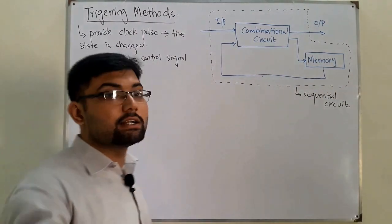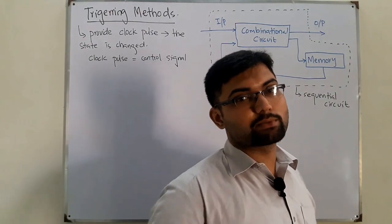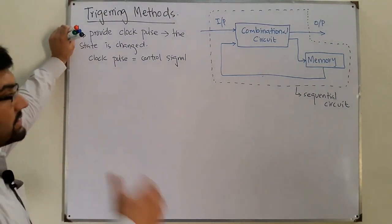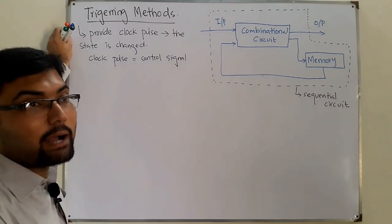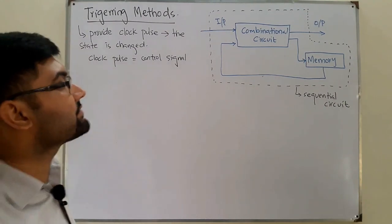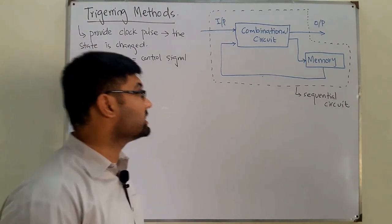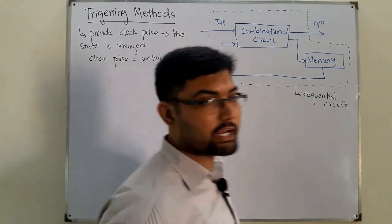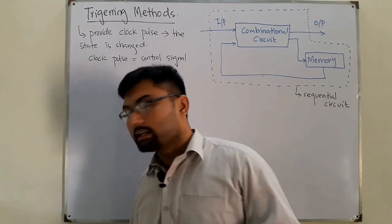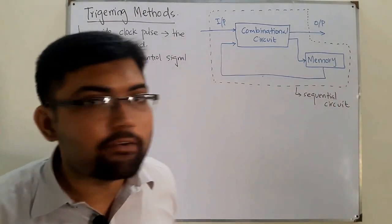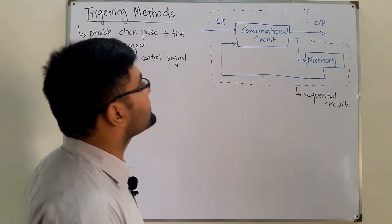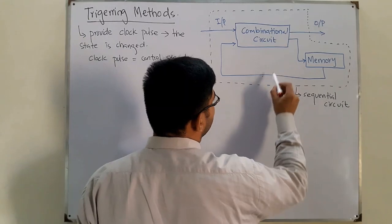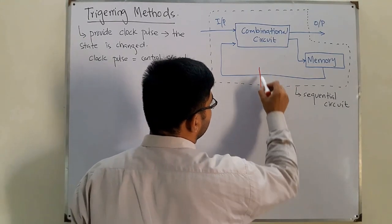We've seen this in the last videos — if you haven't, go back and see, and also subscribe to the channel. Now something new: where do we have to provide this control signal in this circuit? The control signal, which means the clock pulse, is provided at the memory.